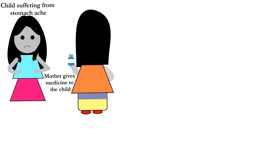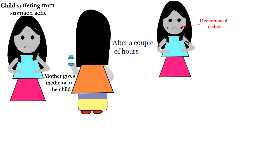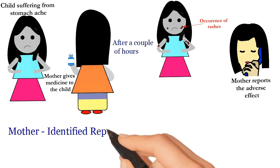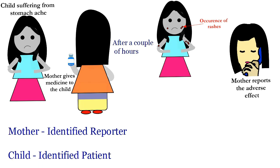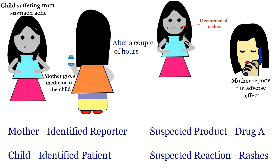Let's understand this through a hypothetical example. A child is suffering from stomach ache; her mother gives her Drug A, a known medicine for stomach ache. After a couple of hours of taking the medicine, skin rashes appear on the child's body. The mother suspects this is an adverse reaction due to Drug A and decides to report it. Here, the mother is the identified reporter, the child is the identified patient, the suspected product is Drug A, and the suspected reaction is rashes on the body.